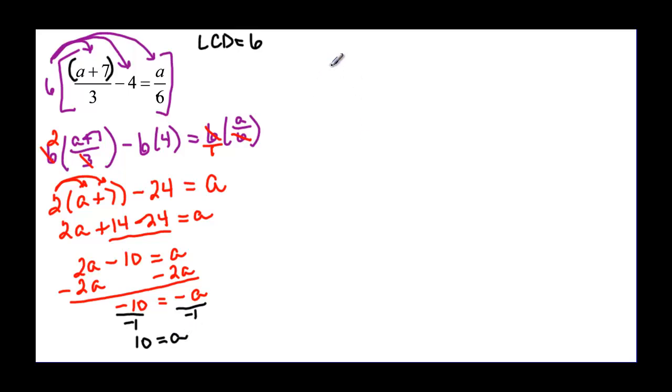And just in case, we will double check. So 10 plus 7 over 3 minus 4 is supposed to be equal to 10 over 6. Well, this is 17 over 3. And if I am going to be able to subtract, I need to make this 4 have a denominator of 3, so I have to multiply by 3 over 3. So that is going to give me 12 over 3. And then that is going to be equal to my 10 over 6, which I may have to reduce.